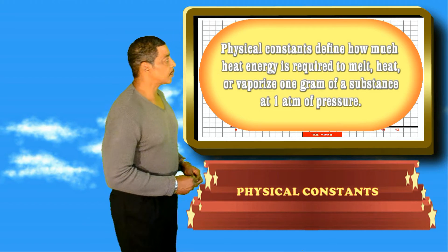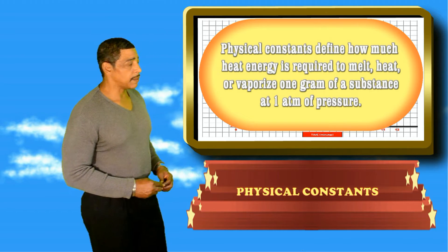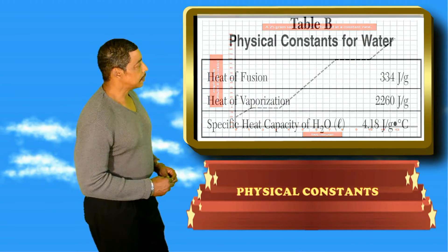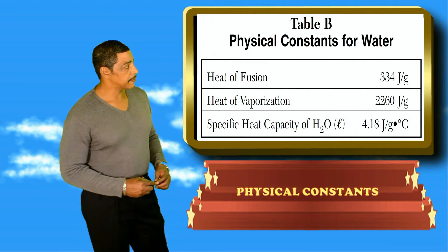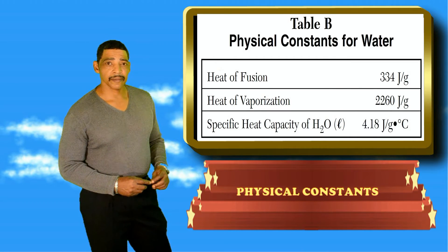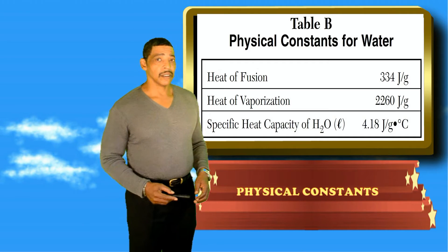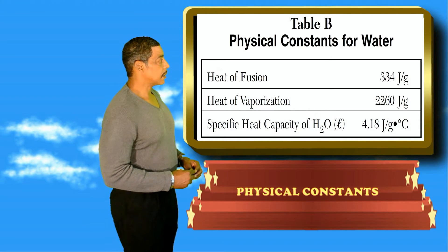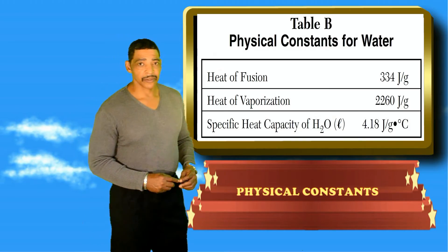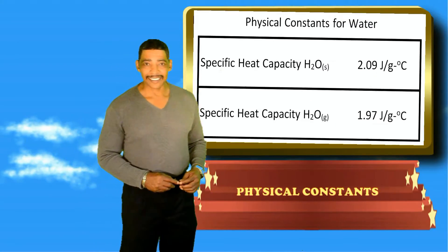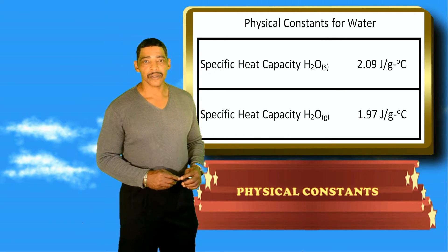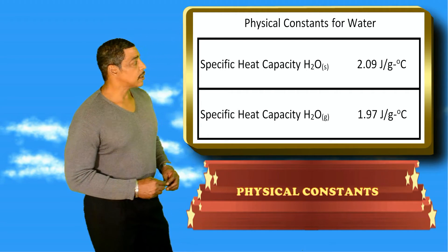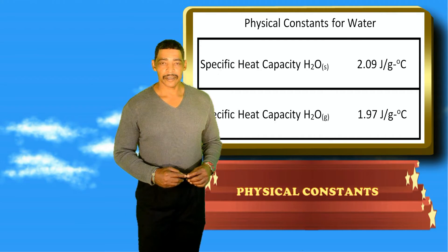Physical constants define how much heat energy is required to melt, heat, or vaporize a one-gram sample of a substance at one atmospheric pressure. In the case of water, the heat of fusion is 334 joules per gram. The heat of vaporization is 2260 joules per gram. The specific heat of liquid water, which is the amount of energy required to increase the temperature of one gram of water by one degree Celsius, is 4.18 joules per gram times degree C. The specific heat capacity of ice is 2.09 joules per gram times degree C, and the specific heat capacity of water vapor is 1.97 joules per gram times degree C.